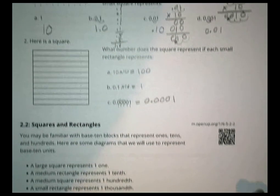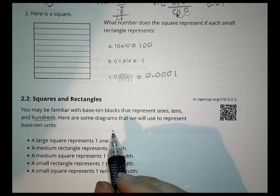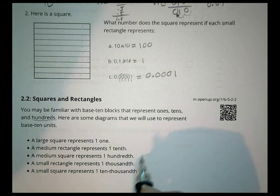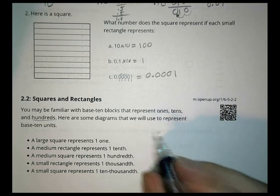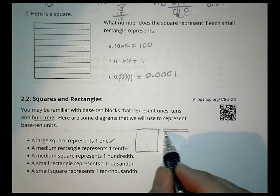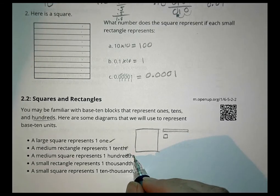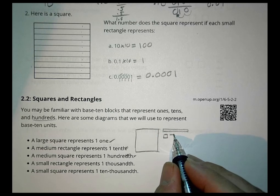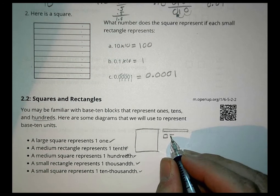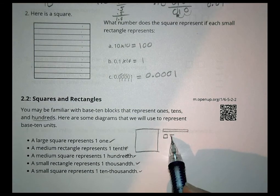Activity two. You may be familiar with base ten blocks representing ones, tens, and hundreds. Here are diagrams we'll use to represent base ten units: a large square is one, a medium rectangle is a tenth, a medium square is a hundredth, then a thousandth, and a ten-thousandth. I'll draw a tenth as a long stick, a hundredth as a small square, a thousandth as a dash, and a ten-thousandth as a dot.